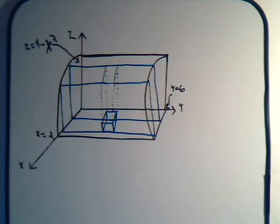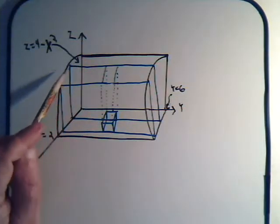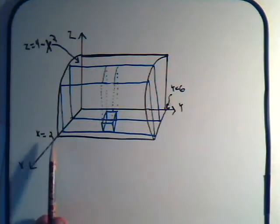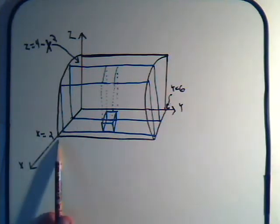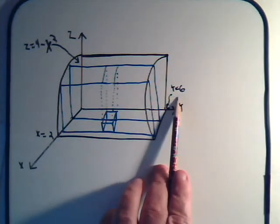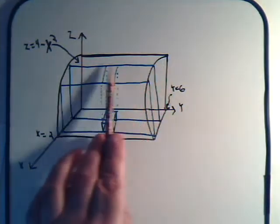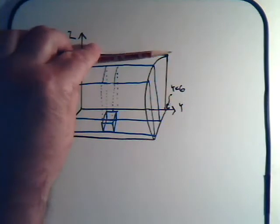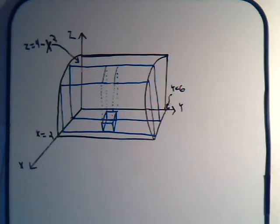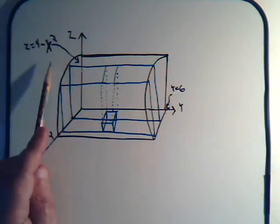In this video we're going to use triple integrals to find the volume of a paraboloid-type surface that curves outward. When it hits the x-axis it's at x equals 2, and it extends along to the y-axis until y equals 6. The straight edges go up and the surface curves out. The equation of the surface is z equals 4 minus x squared.